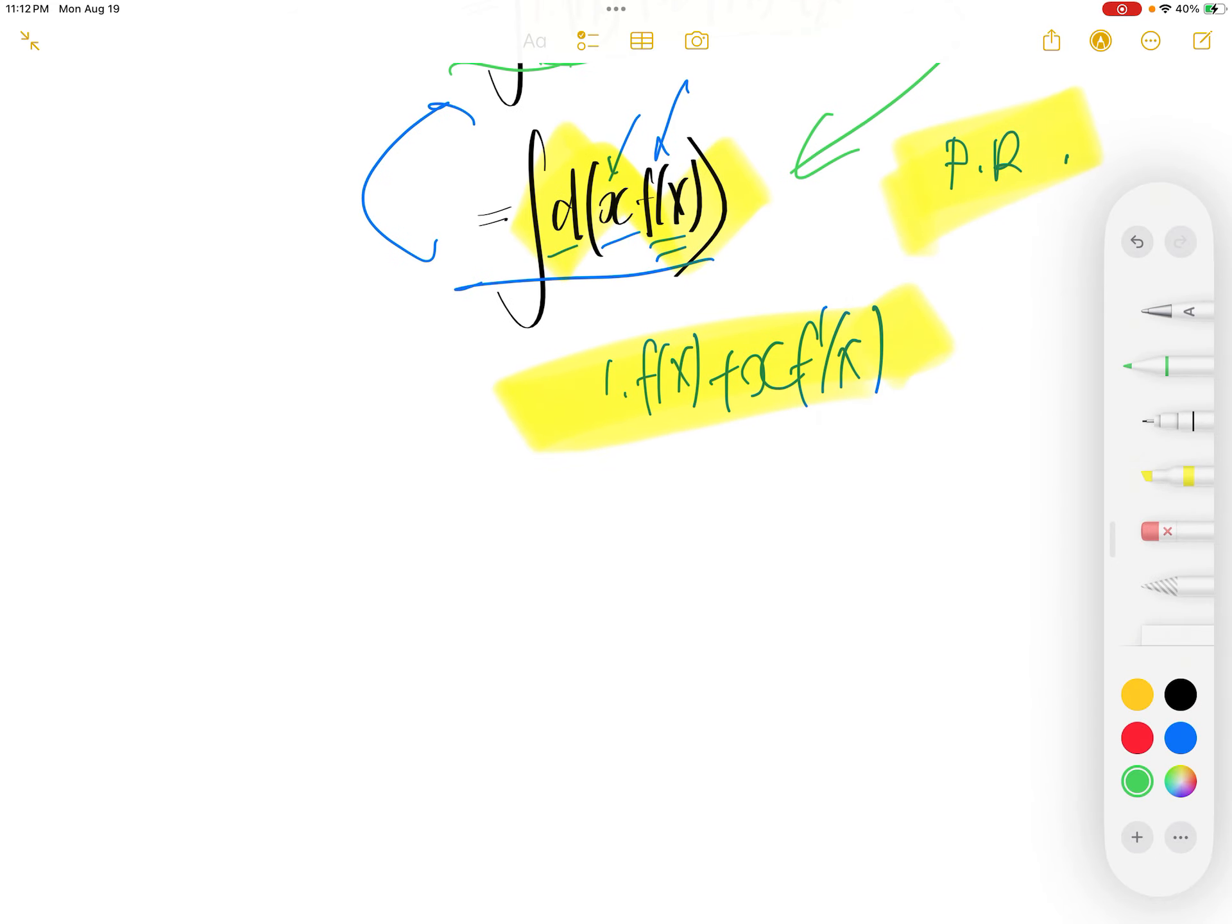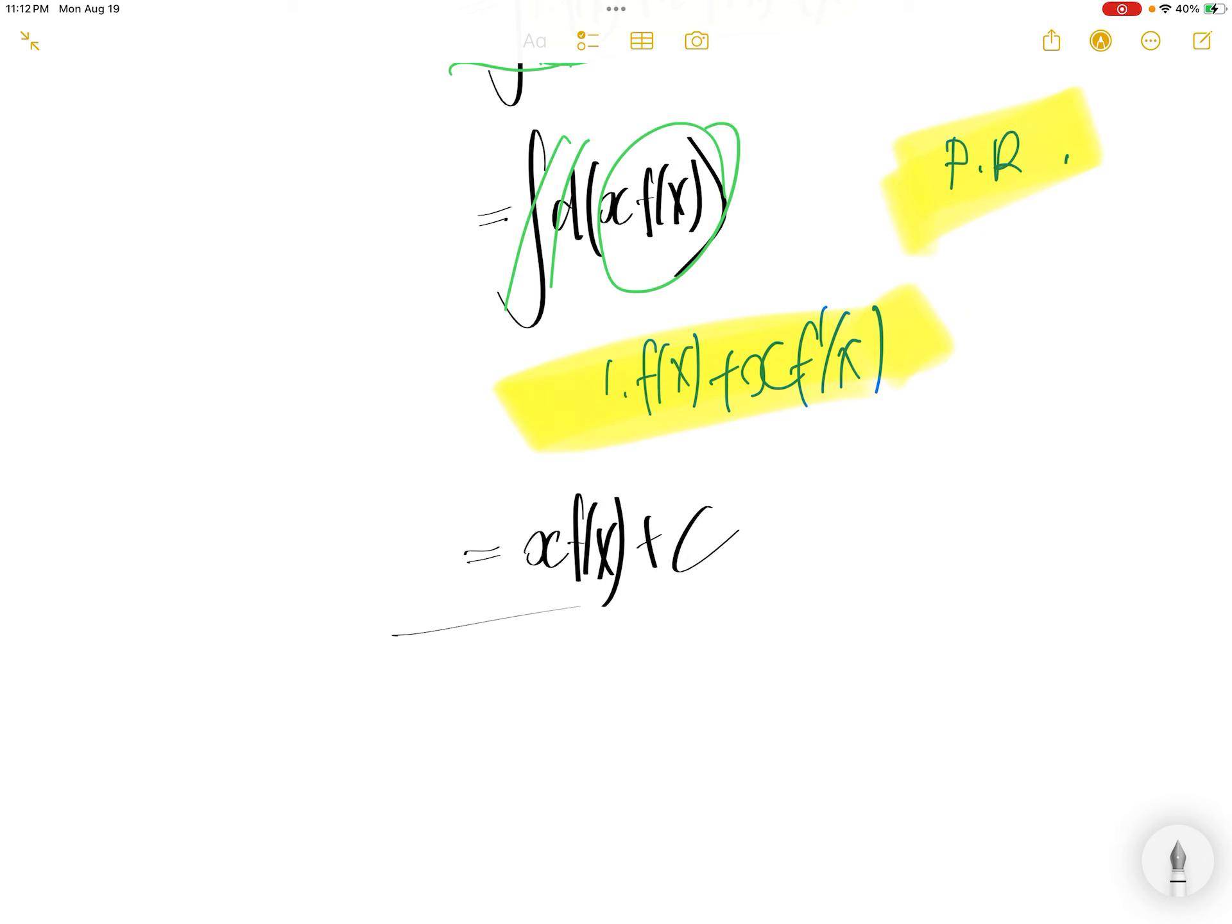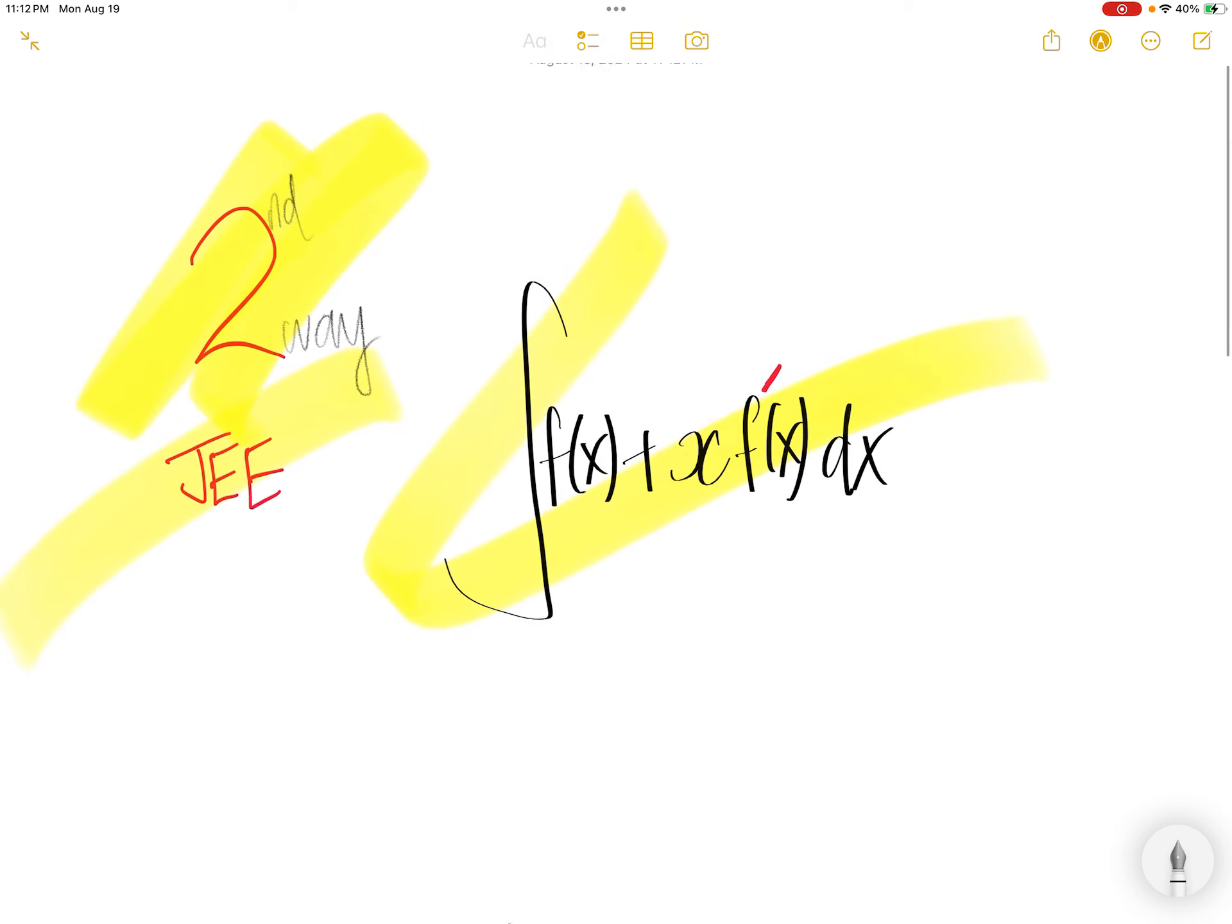Integral and d cancel, let's remove the junk. You cannot see, remove. Integral and d cancel, this piece comes out as x times f of x plus c.